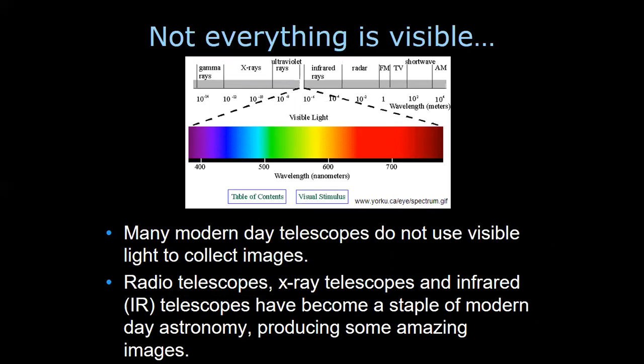Using optical telescopes we can only see a small range, but the universe produces a wide collection of electromagnetic waves. Many modern day telescopes do not use visible light to collect images — we use radio telescopes, X-ray telescopes, and infrared telescopes, which are more widely used in modern astronomy. We are also combining lenses with chips to collect images properly, like in a digital camera.